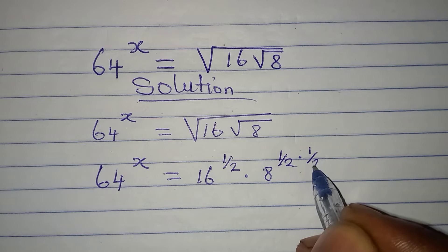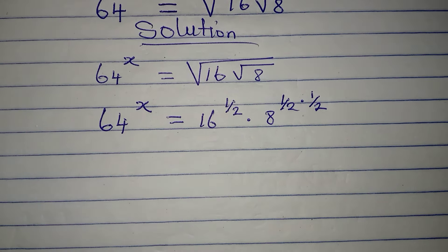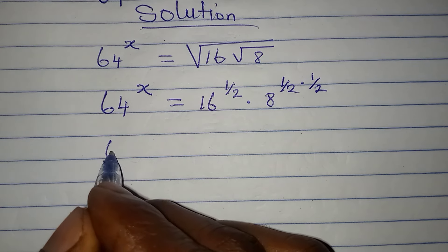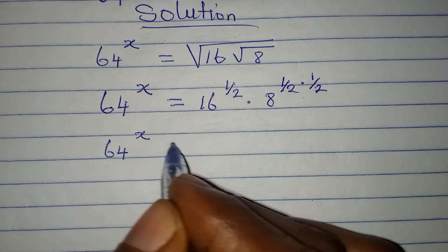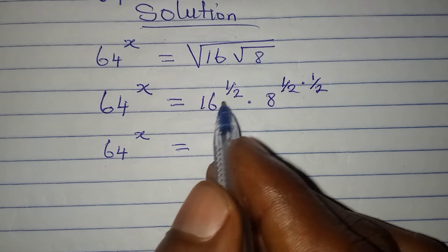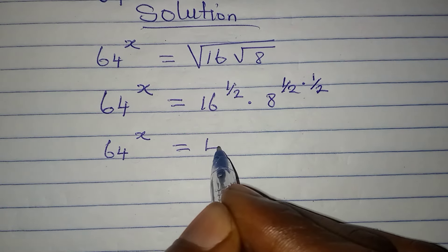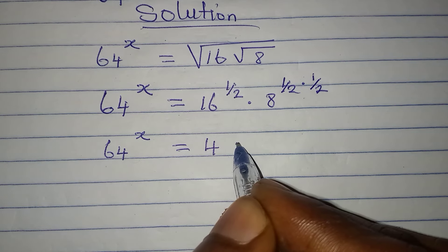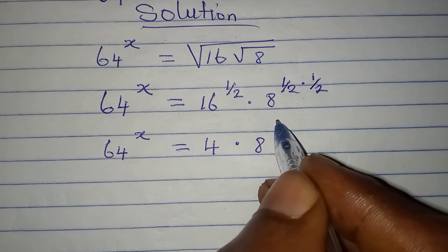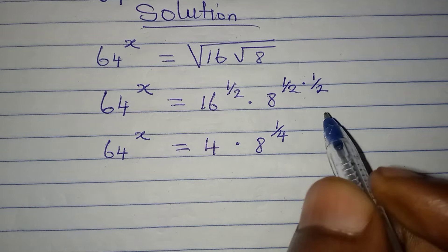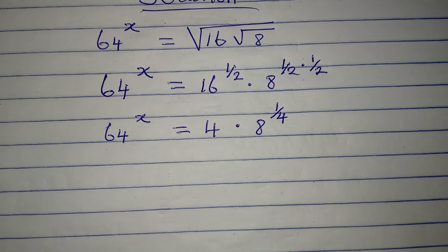Taking a step further, I will have 64 to the power of x equals 16 to the power of half — that is, the square root of 16, which is 4 — then multiplied by 8 to the power of 1 over 4, that is 2 times 2.